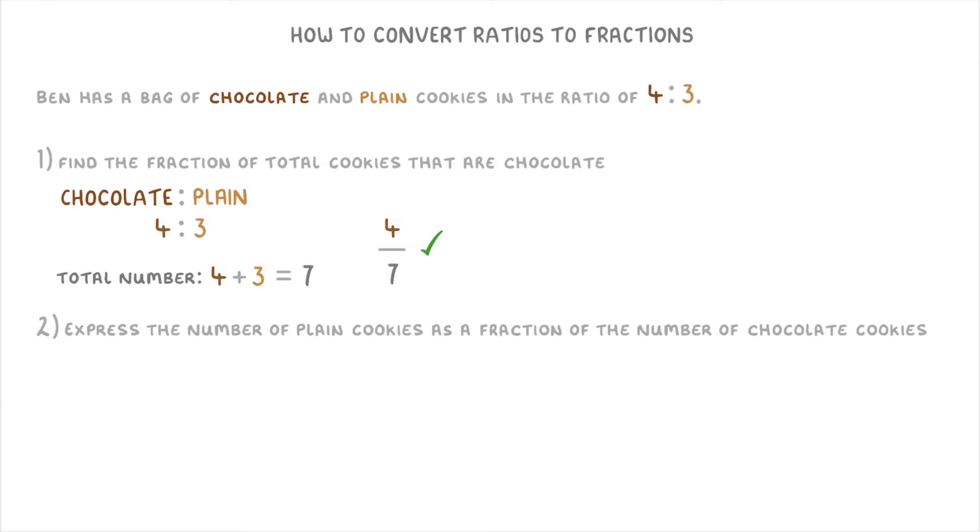Then for the second part, to express the number of plain cookies as a fraction of the number of chocolate cookies, we just do the number of plain cookies, which is 3, over the number of chocolate cookies, which is 4. And this tells us that there are 3 quarters as many plain cookies as there are chocolate cookies.